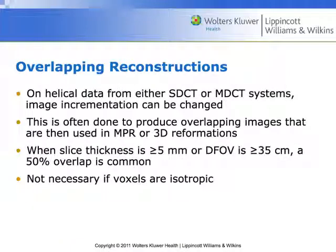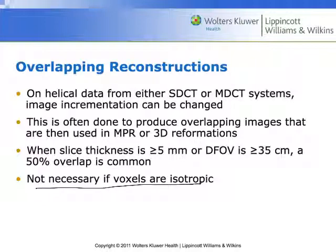Sometimes there is a need for an overlapping reconstruction, and for the activity for this class, we are going to look at whether or not we need to do an overlapping reconstruction. One thing to bear in mind is how pixels and voxels are understood by a CT scanner. Overlapping reconstructions are not necessary if voxels are isotropic. She gives an example in our textbook of this on page 182 in clinical application box 182.